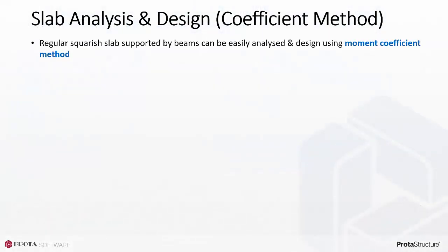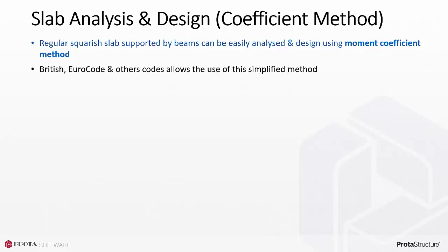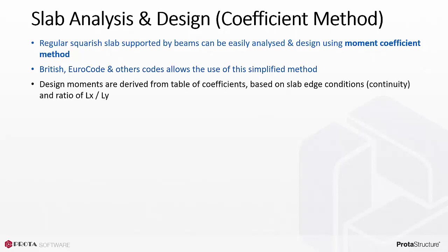Regular squarish slabs supported by beams can be easily analyzed and designed using the moment coefficient method. British, Eurocode, and other codes allow the use of this simplified method. Design moments are derived from a table of coefficients based on slab edge conditions or continuity, and the ratio of LX, the shorter dimension, divided by LY, the longer dimension.